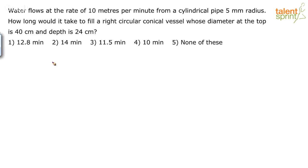If you try and visualize, it is like this. Let us assume there is a cylindrical pipe. What is the radius? 5 mm is the radius. So, R is equal to 5 mm here.